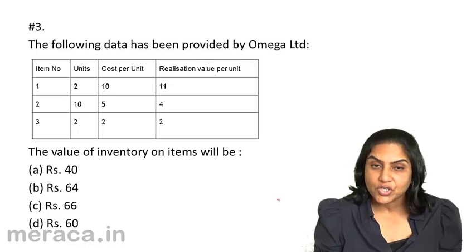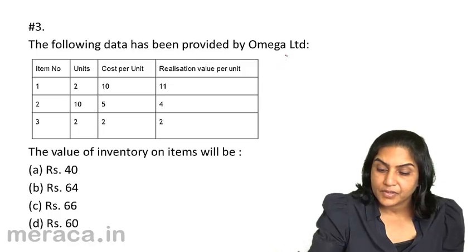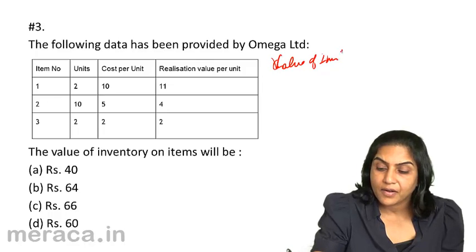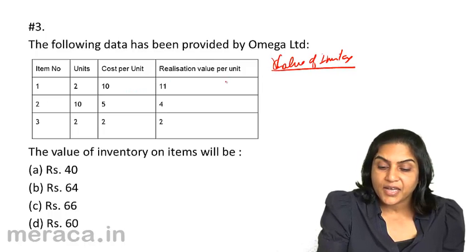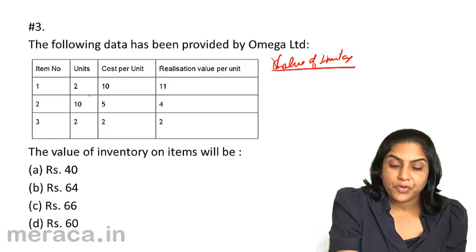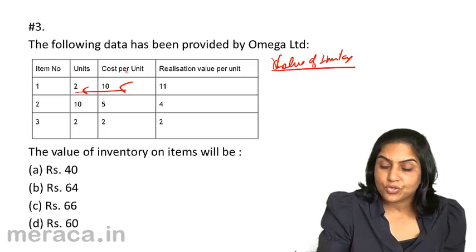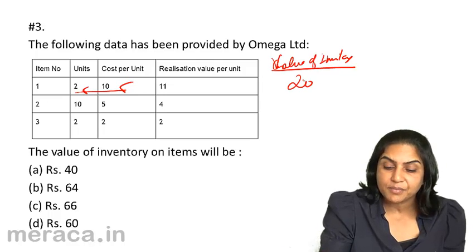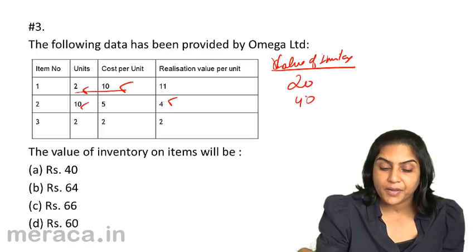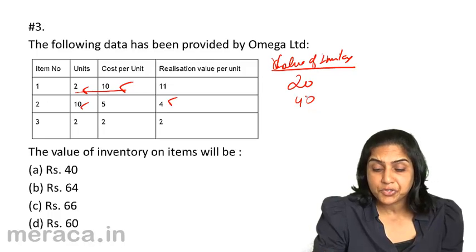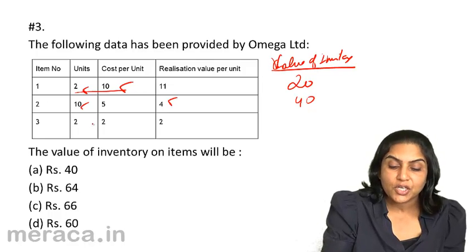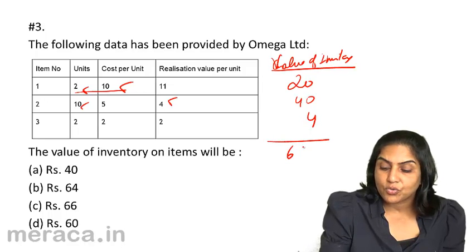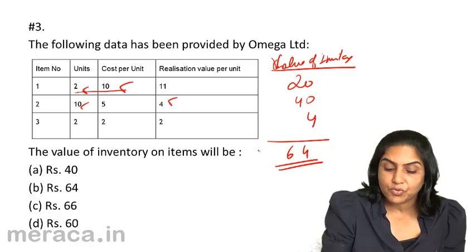Inventory would be valued at cost or realizable value, whichever is lower. In this example, Item 1: cost is 10, realization is 11, so we take 10 × 2 = 20. In the second case, the realizable value is only 4 whereas cost per unit is 5, so we take 4 × 10 = 40. In the third case, both cost and realizable value are 2, so we take 2 × 2 = 4. Giving us a total of 64. Therefore, the correct answer is B.